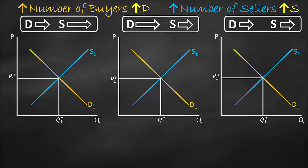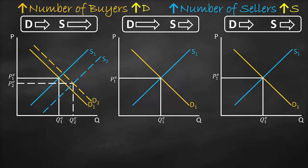In the first graph, we shift the supply curve to the right with a big shift and label it S2 — a dotted line because it is the new curve. Then we shift the demand curve to the right with a small shift and label it D2, also a dotted line. The intersection of S2 and D2 is the new equilibrium point, giving new equilibrium price P2 and quantity Q2. We notice price dropped from P1 to P2 and quantity increased from Q1 to Q2. To summarize: price decreases and quantity increases.